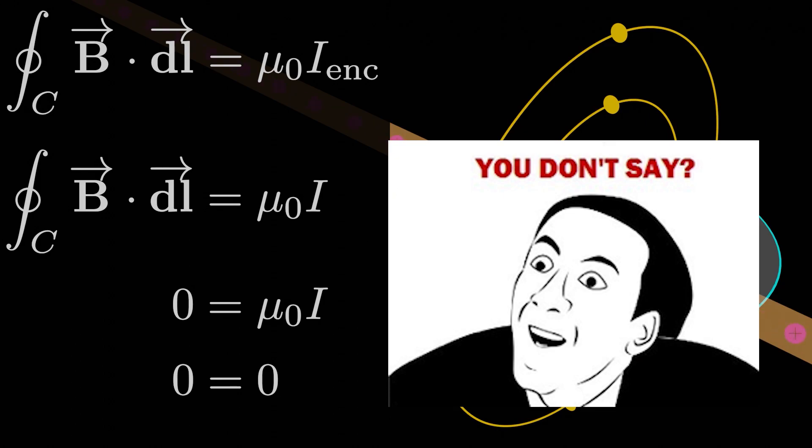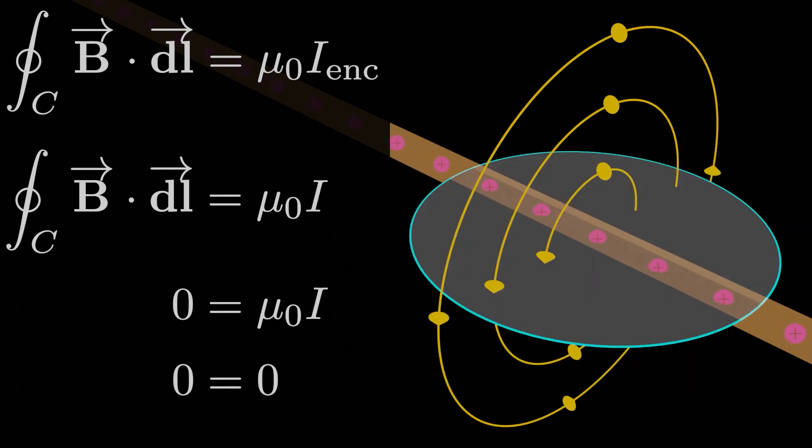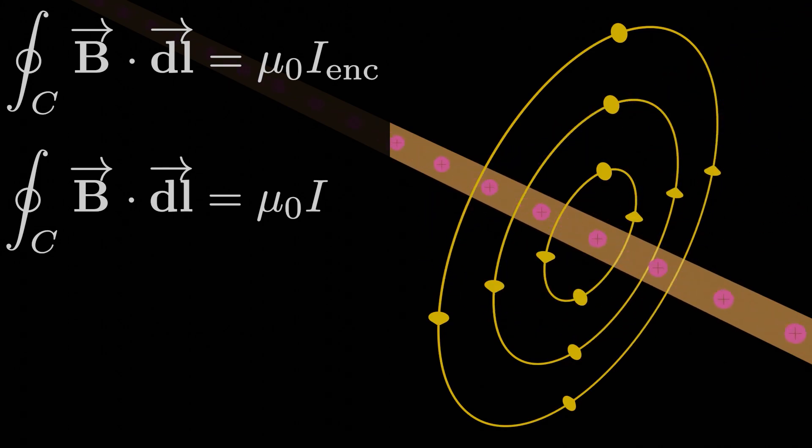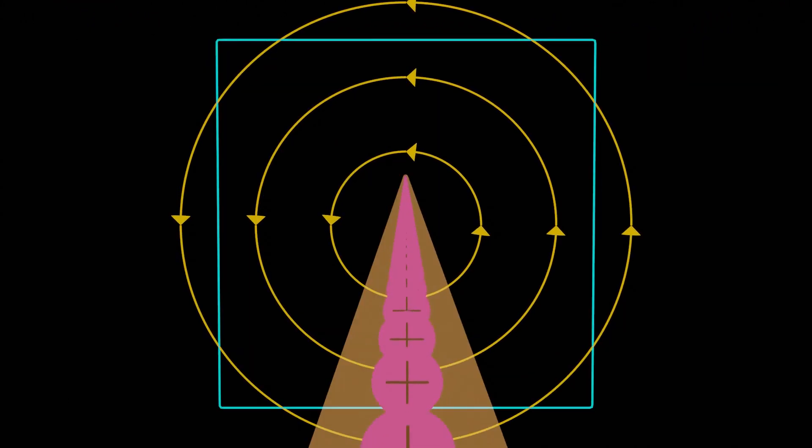Wow, who would have thought? That choice for a loop wasn't so helpful either, so I'll introduce another choice just to drive the point home. What if instead of a circular loop, we had a square loop like this, perpendicular to the wire? Again, we run into the same problems as the first two loops. Neither does B point in the same direction as DL along the loop, nor does B have a constant magnitude along the loop.